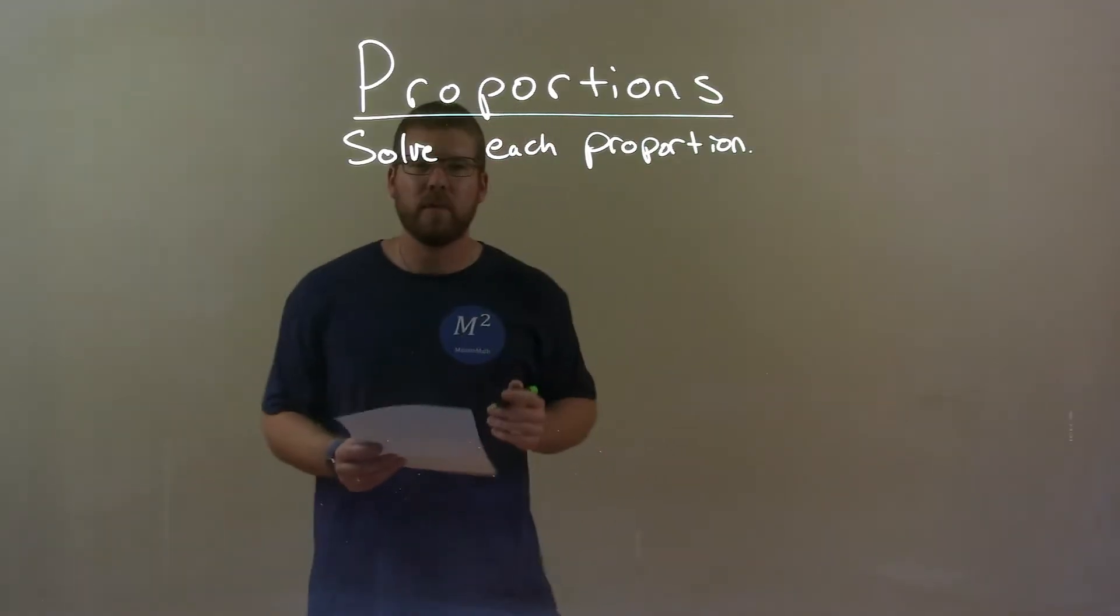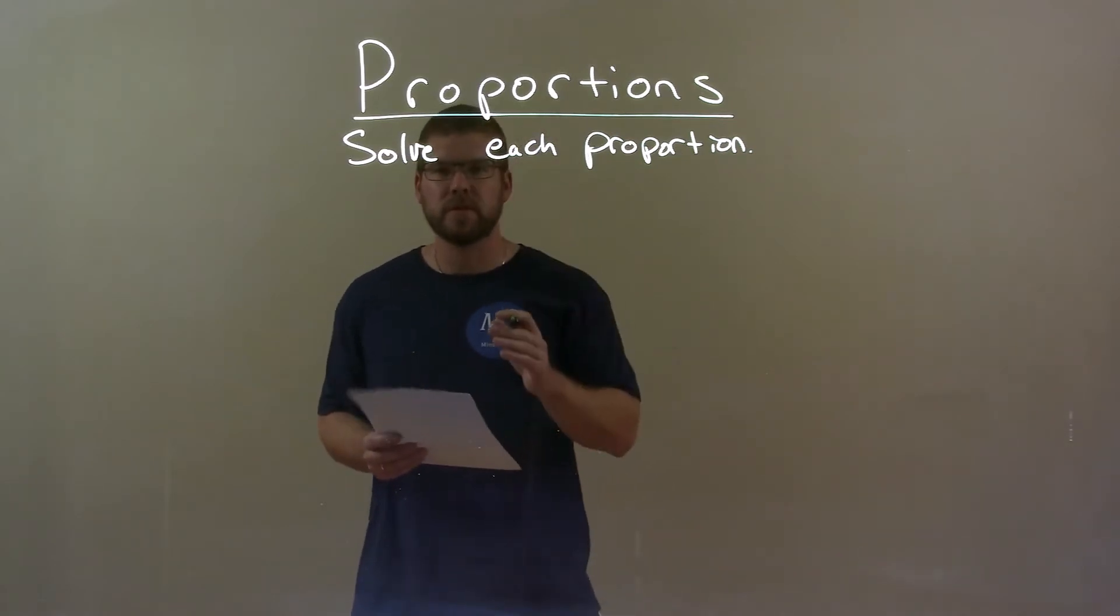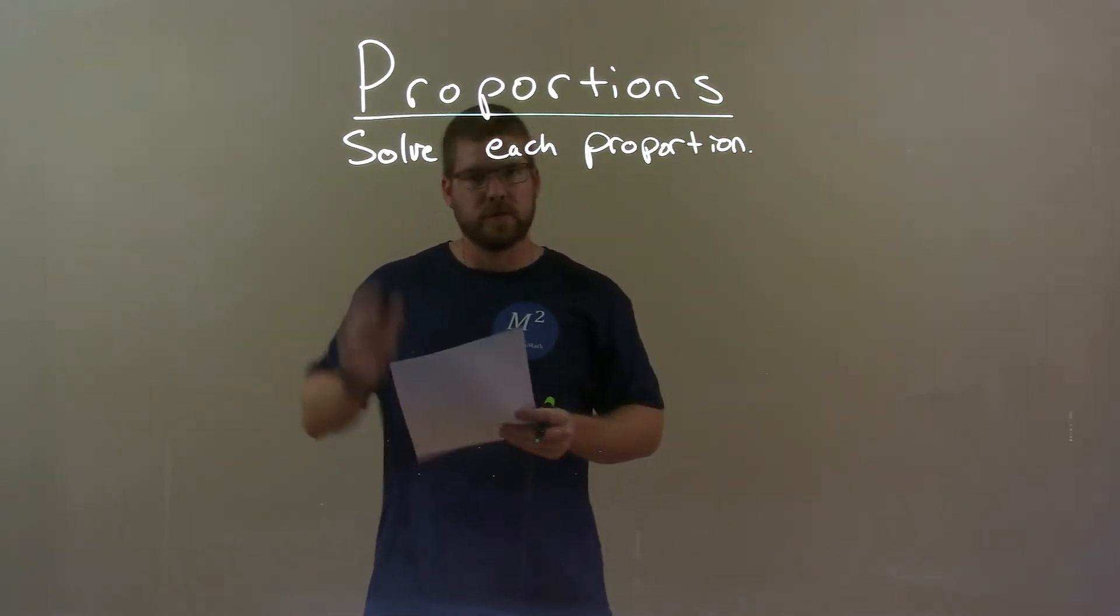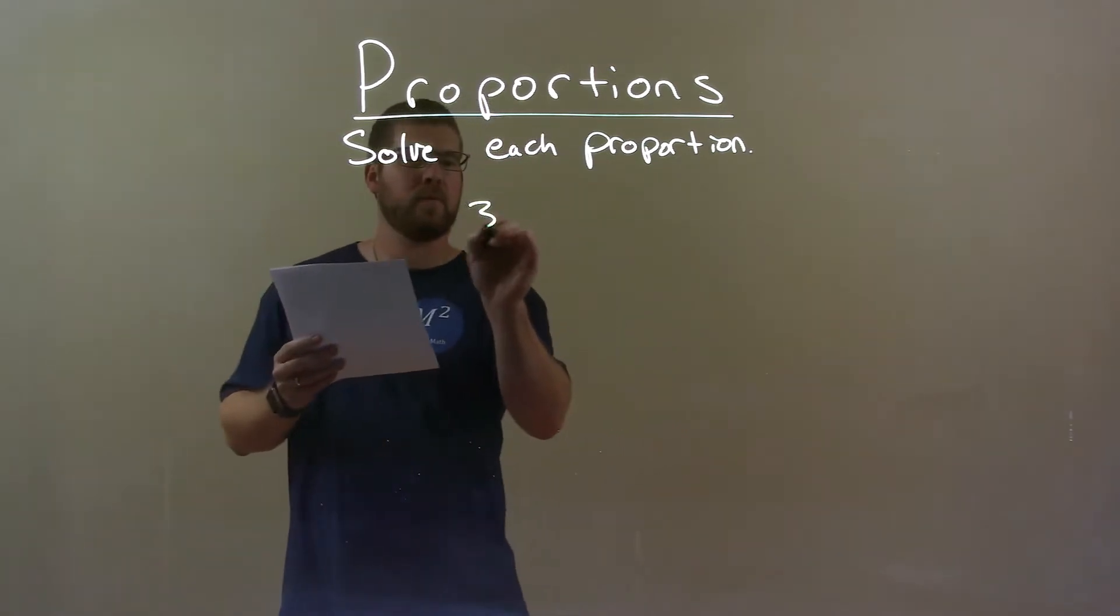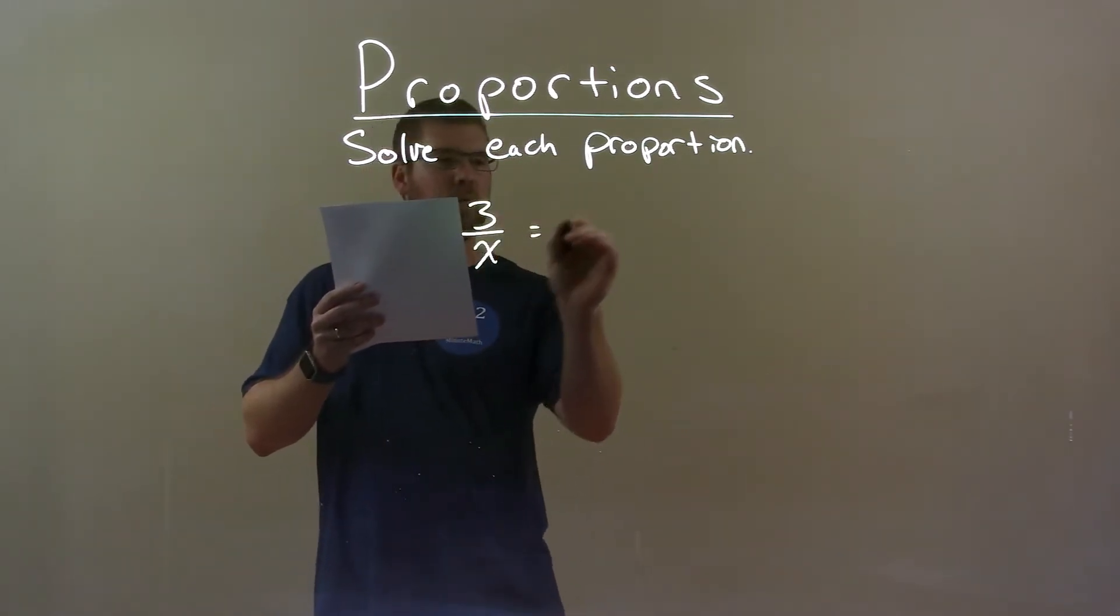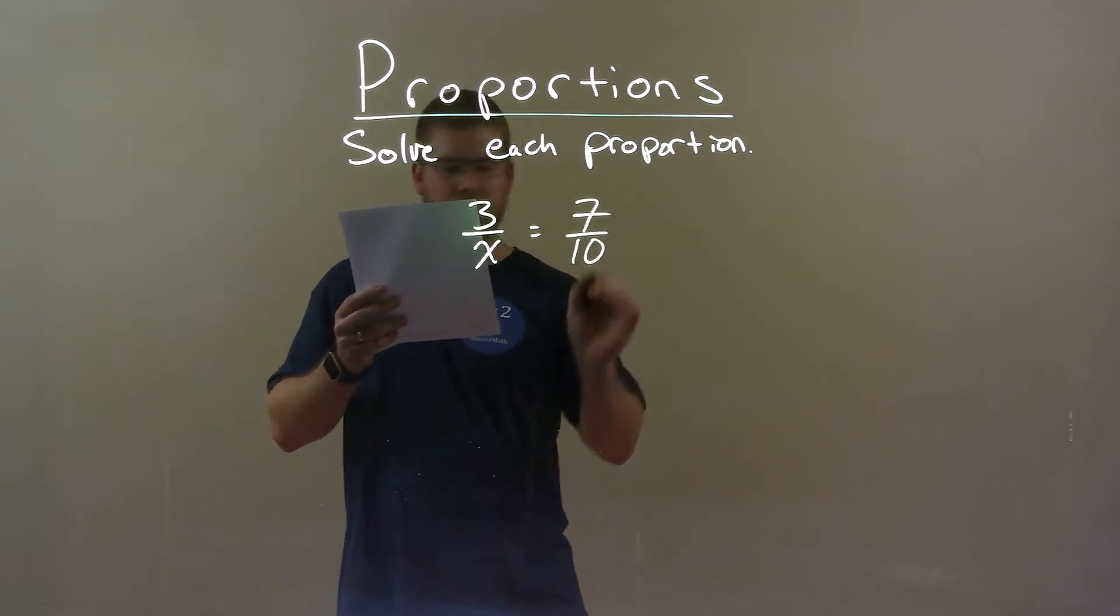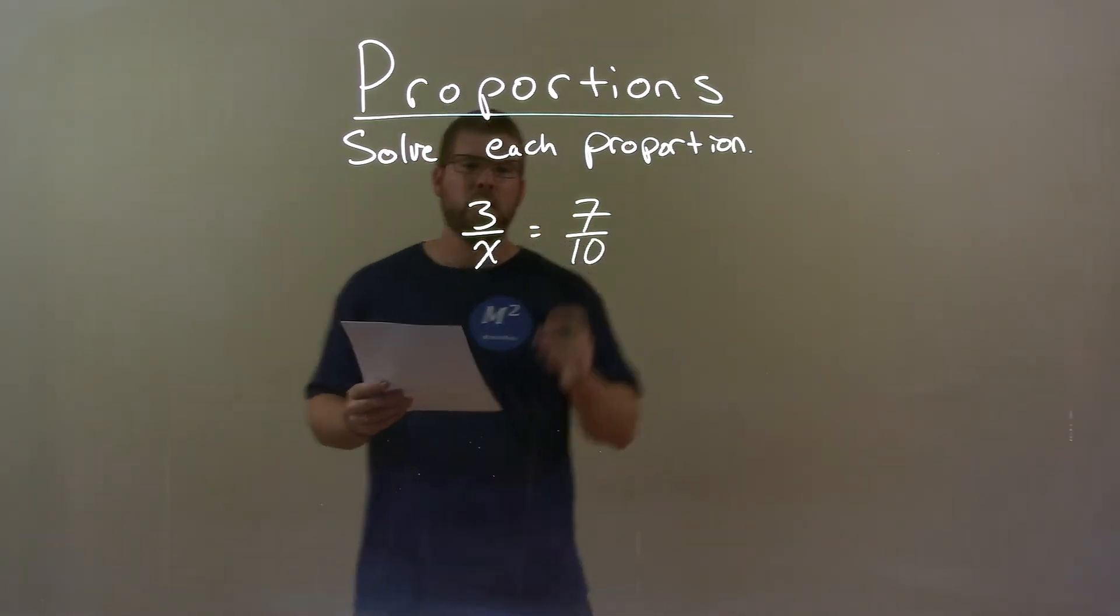Hi, I'm Sean Gannon, and this is MinuteMath. Today we're learning about proportions. We're going to solve each proportion. So, if I was given this proportion, 3 over x equals 7 over 10. Okay? Well,